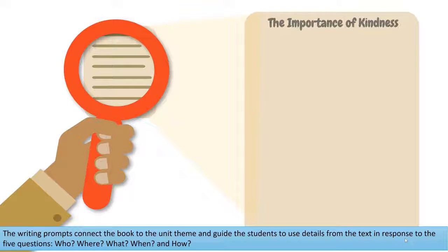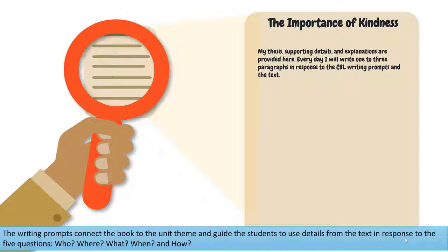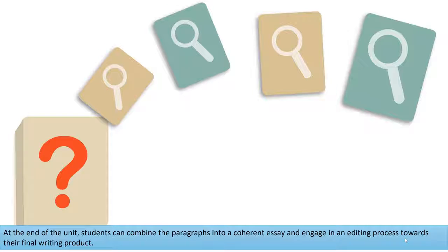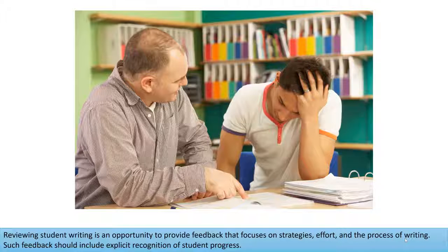The writing prompts connect the book to the unit theme and guide students to use details from the text in response to the five questions: who, where, what, when, and how. At the end of the unit, students can combine the paragraphs into a coherent essay and engage in an editing process toward their final writing product.